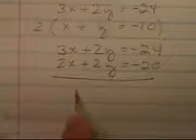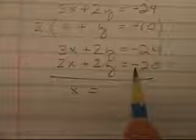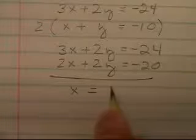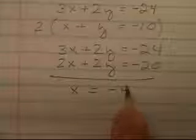Then we will subtract x. It turns out to be, careful, to subtract negative 20 is to add 20 to negative 24. x turns out to be negative 4.